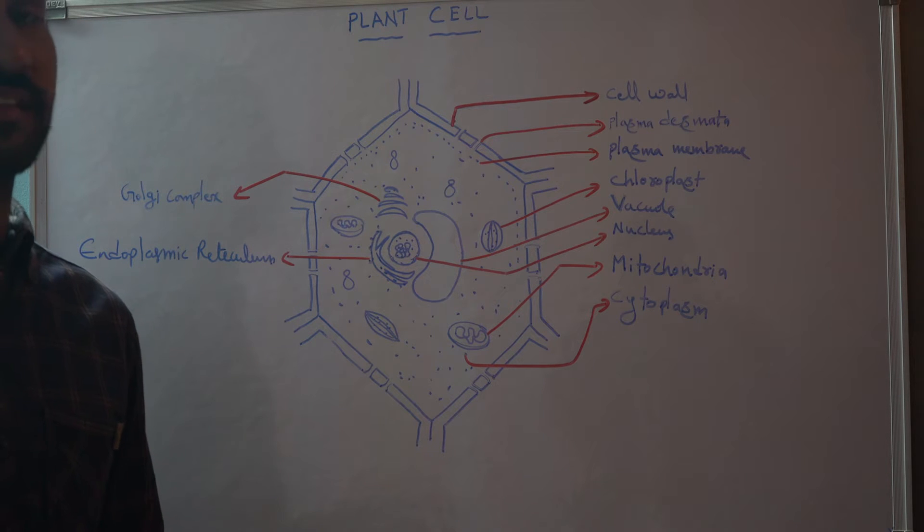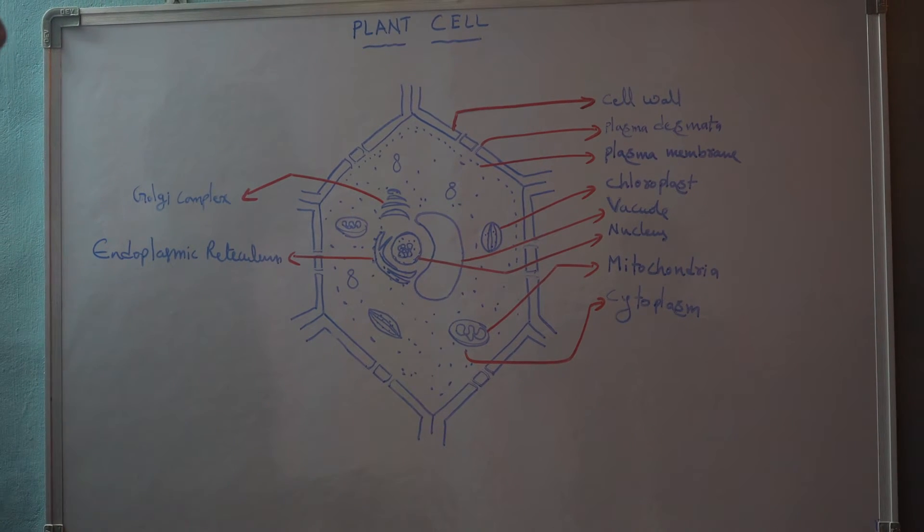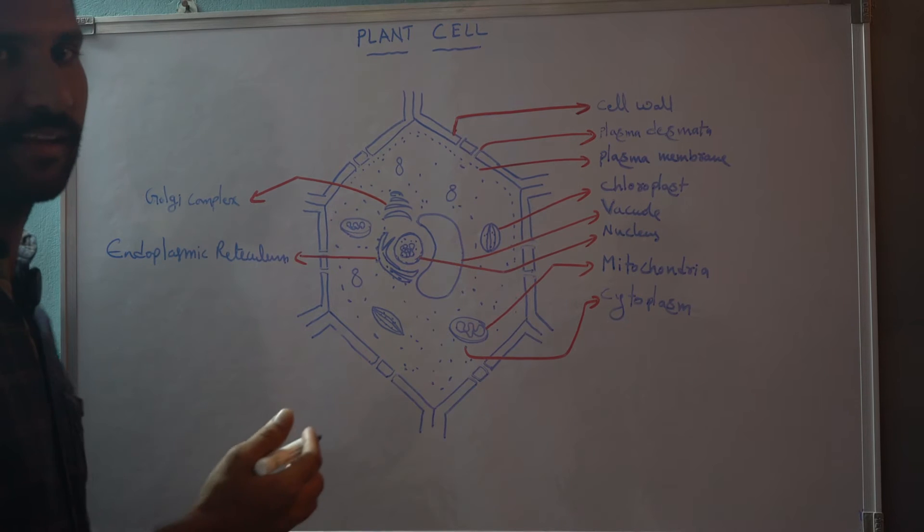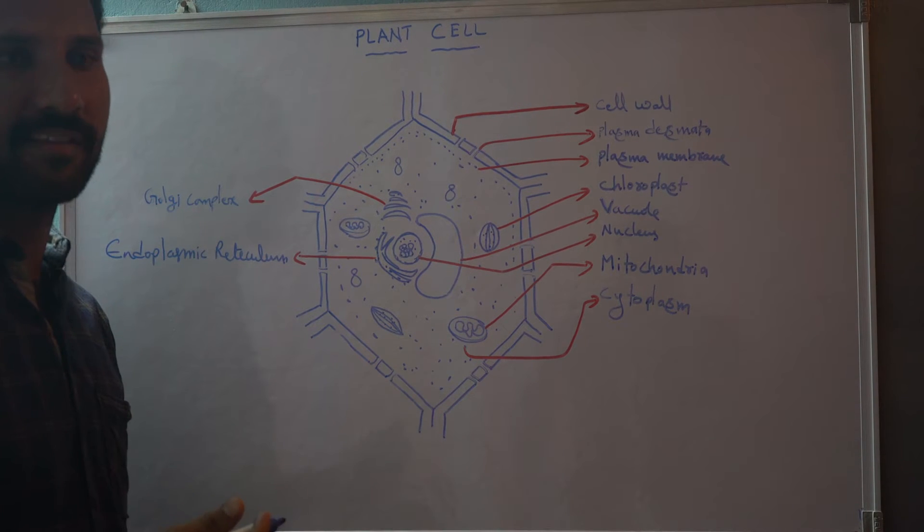Plant cells consist of different types of cell organelles. One by one we will see here. When you observe the plant cell, it is different from the animal cell.